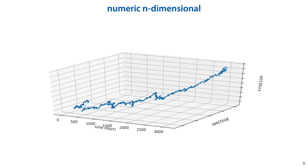Sequential numeric data can also be multidimensional. For instance, in this example we see the closing index of the AEX and the FTSE 100 over time. At each point in time we get a 2D vector, so this data is a sequence of two-dimensional vectors.